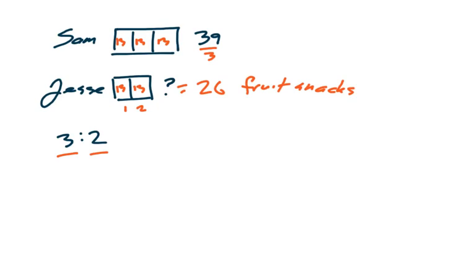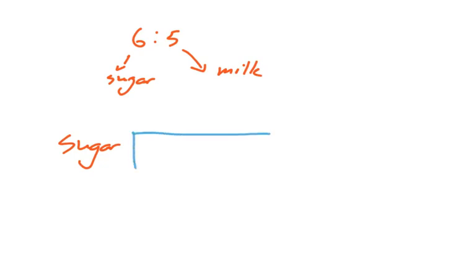Okay, let's look at one more example. In this case, we have a recipe for cupcake icing, which includes 6 cups of sugar for every 5 cups of milk. So that means our ratio is 6 to 5, and the 6 stands for sugar, and the 5 stands for milk. So, if we draw this using a tape diagram, we would set up our sugar right here, so that we have a set of 6 boxes for the sugar.